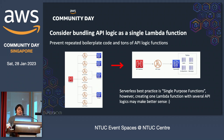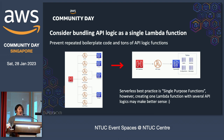Next, consider bundling API logic as a single Lambda function. Combining API Gateway, Lambda functions, and DynamoDB is a very famous pattern for serverless RESTful APIs. Serverless best practice is single-purpose functions, so a Lambda function should keep its logic simple and small with a clearly defined scope and responsibility. However, if you create a Lambda function for each and every API operation, you will have to create many Lambda functions with almost the same boilerplate. When tracing a single use case with multiple API calls, you have to collect logs from different log streams. Also, lots of Lambda functions means lots of cold starts. I would say for web API logic, creating one Lambda function makes better sense.